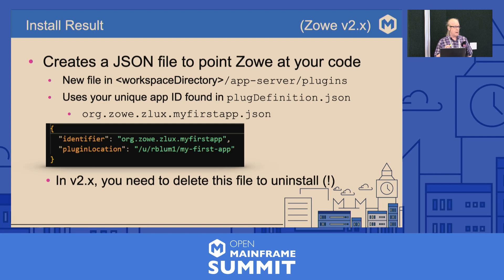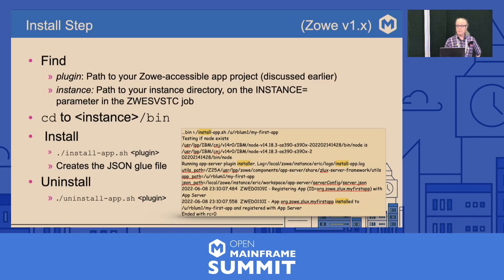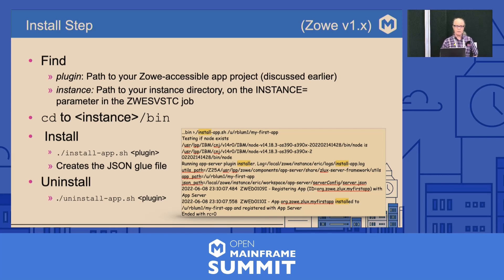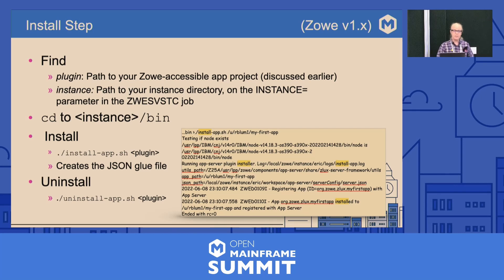If you are uninstalling under version 2 of Zoe, you will need to delete the JSON file manually. There is no uninstall command as of version 2.2. The install step under version 1 is a little different — arguably easier. You need to know where your plug-in is and where your instance directory is. CD to the instance directory subdirectory bin, then issue the install-app.shell command. The .slash prefix for non-Linux users is very important here. It creates that JSON glue file.